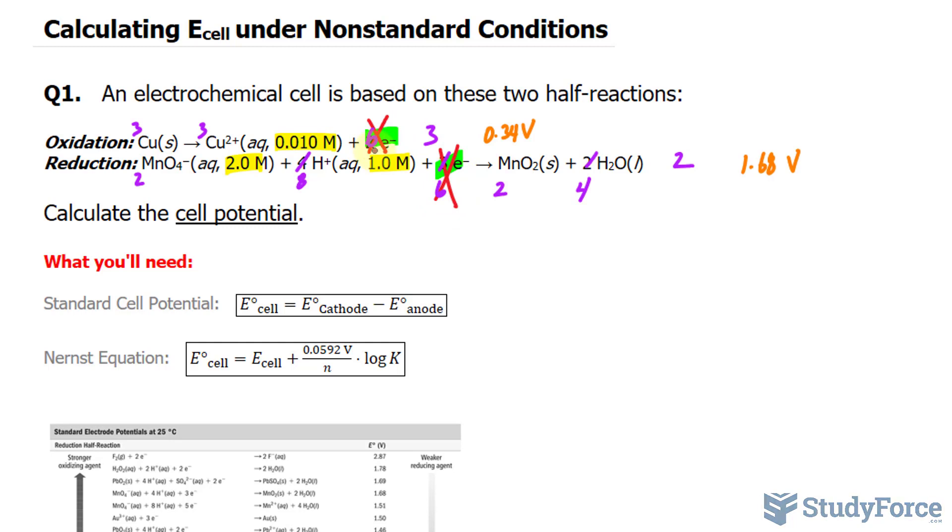Combining all the reactants, we have Cu in its solid state, plus MnO₄⁻, plus, and you want to make sure that the coefficients are correct, so this is 3, 2, plus 8 hydrogens. And this yields, the products are Cu²⁺ with a coefficient of 3, plus 2 MnO₂, plus 4 water molecules.